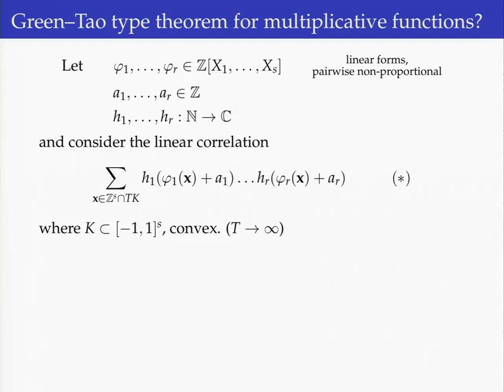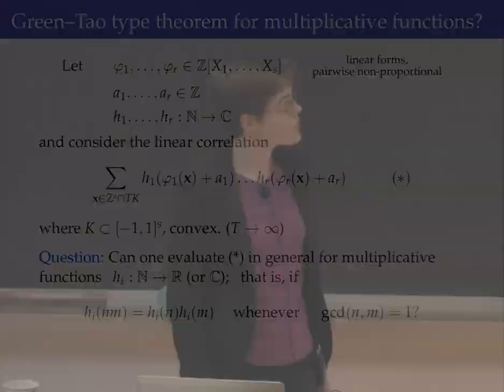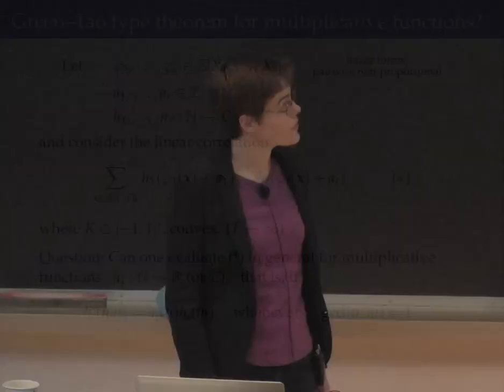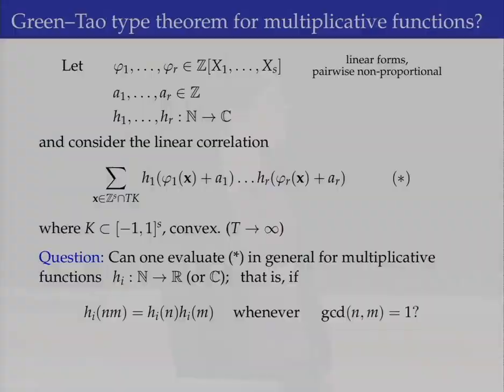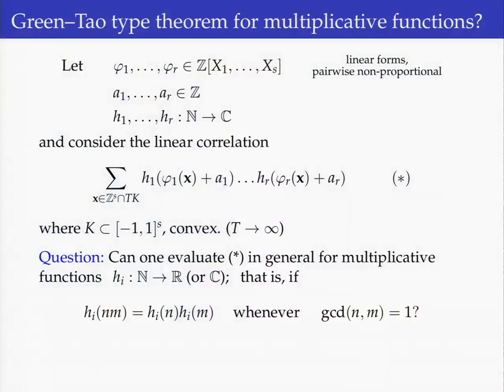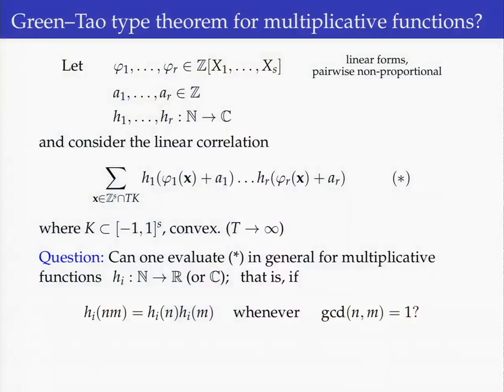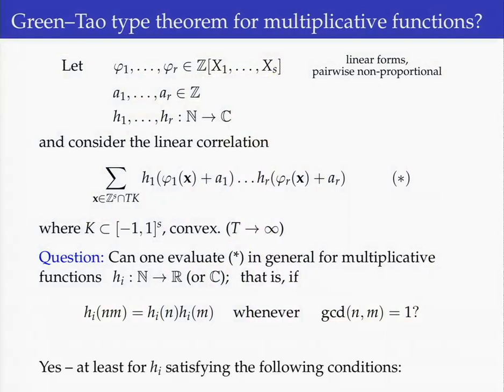The question I want to consider is the following: can we evaluate this correlation in some generality for multiplicative functions? That is, for functions defined on the natural numbers with values in R or C, that preserve multiplication on pairs of coprime integers. What I will present is a partial answer — we will be able to do so for functions belonging to a certain class.